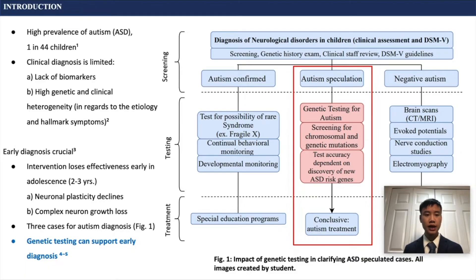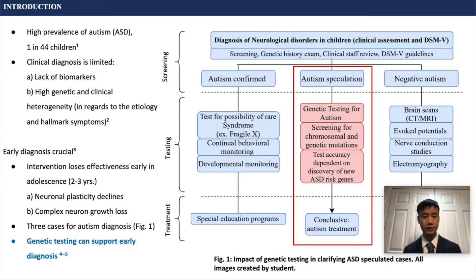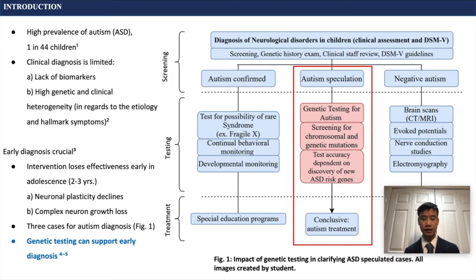There is a high prevalence of autism, as 1 in 44 children are afflicted by the disorder. Clinical diagnosis has been limited by the lack of conclusive biomarkers and the high genetic and clinical heterogeneity in regards to autism's etiology and the hallmark symptoms.